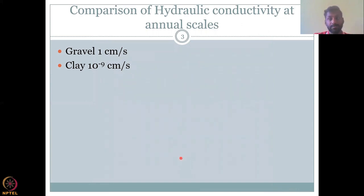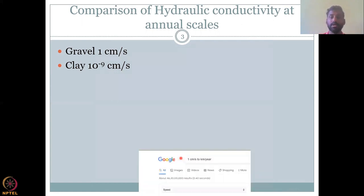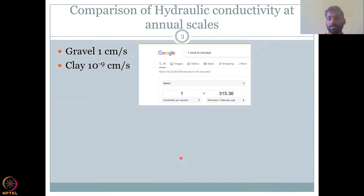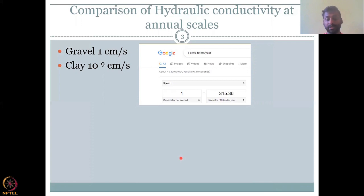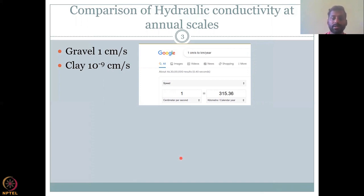Let's see what that equates to. If we convert it to hourly, then daily, then annual — you can do it on your calculator or quickly run it through Google. Type '1 centimeter per second to kilometer per year.' Notice how I typed it: centimeter slash second to kilometer slash year. Google will automatically give you a calculator and convert it. The value I put is just one, but you can put 10 or 5 depending on your measurement value.